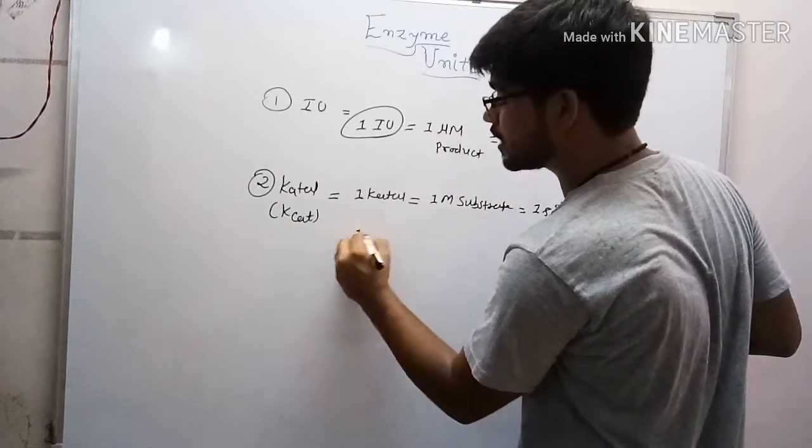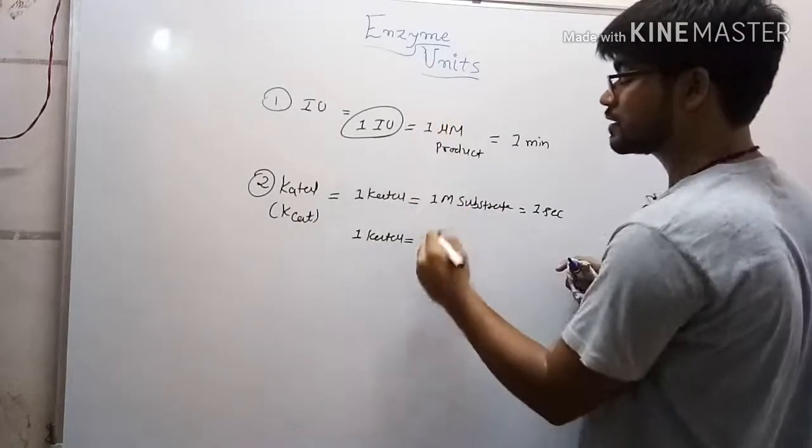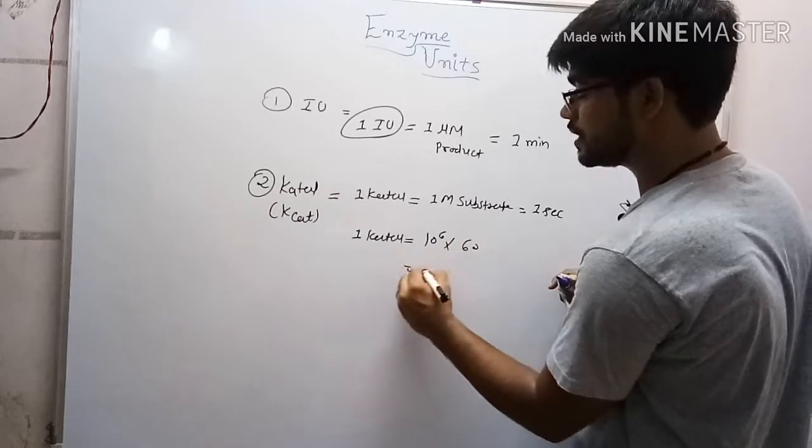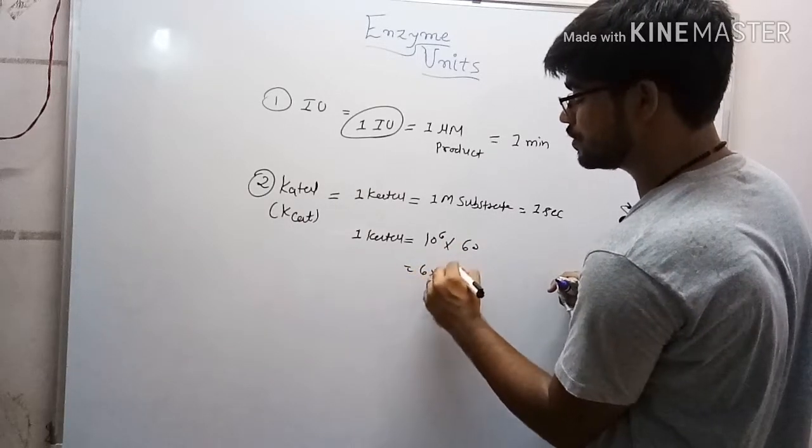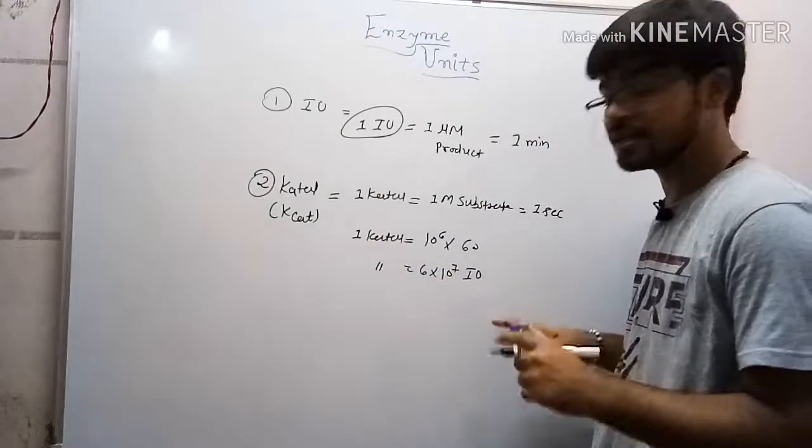If we want to convert these, one katal equals the micromole, so 10^-6, times 60 seconds in one minute, which means 6 × 10^7 IU. So one katal equals 6 × 10^7 IU units.